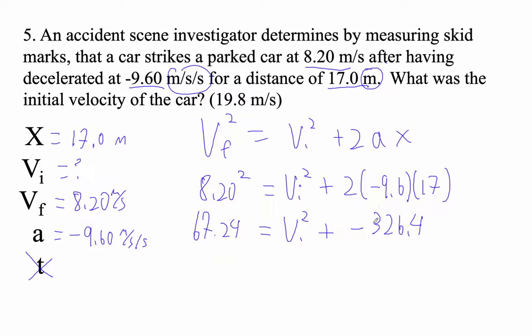So now the next thing I'm going to do is add this to both sides. So that guy plus, which, yeah, that's okay. And I get 393.64 equals vi squared.